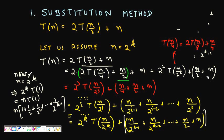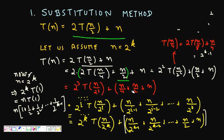Continuing, T(N/4) = 2T(N/8) + N/4. Substituting again, T(N) becomes 2³·T(N/2³) + N/4 + N/2 + N.